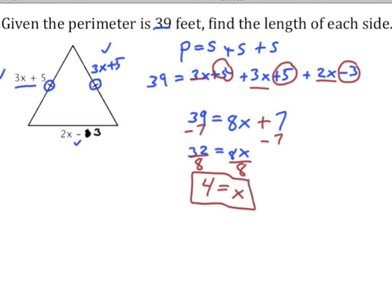But we're not done yet. Remember, let's answer the question that's asked. We're asked to find the length of each side, so we'll have to substitute x back in. For this side, we'd say 3 times 4 plus 5.